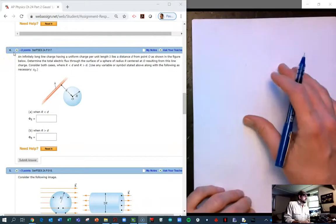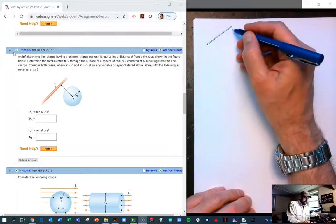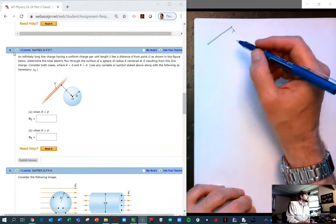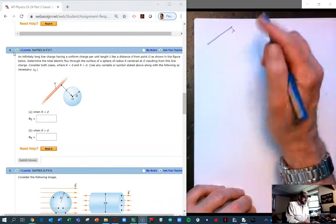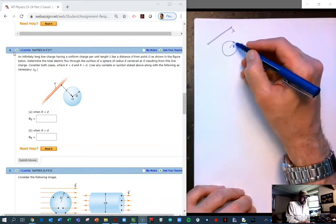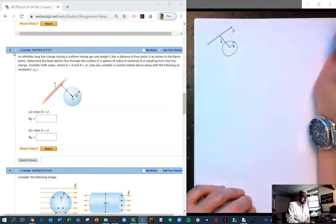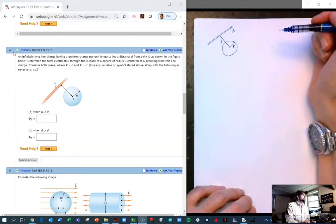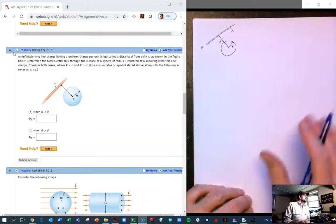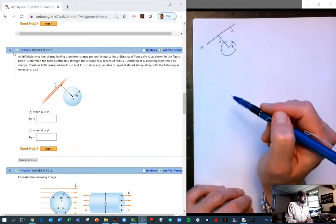So we have an infinitely long line of charge with some uniform charge density. Lambda is given to us. And we're looking for the total electric flux through the surface of a sphere whose radius is big R. So let's draw the picture out here. The big radius is like so, and the center of that sphere is some distance D from the charge, from the infinitely long line of charge. So the question is, what is the flux when R is bigger than D and R is smaller than D?